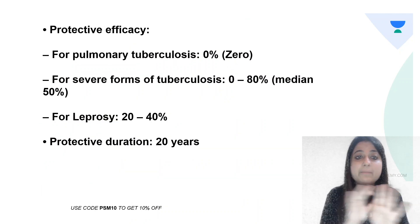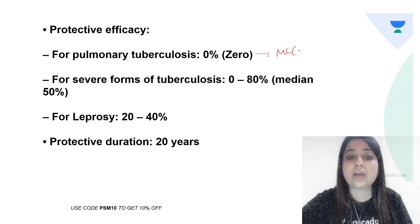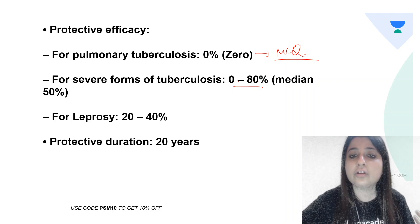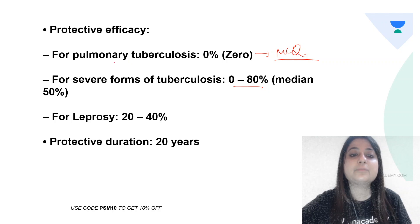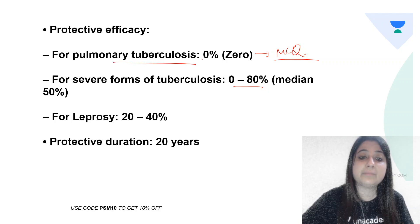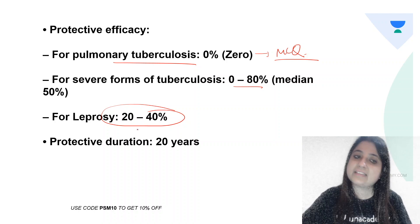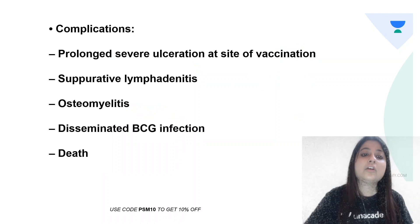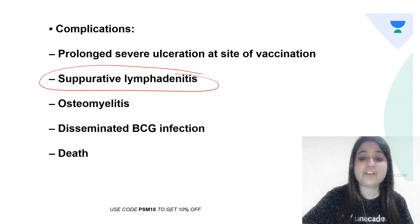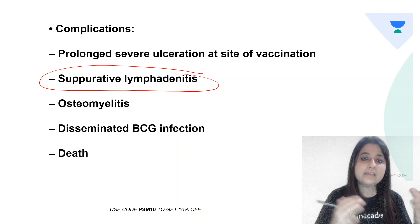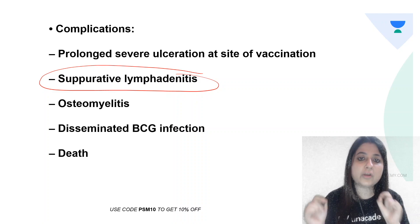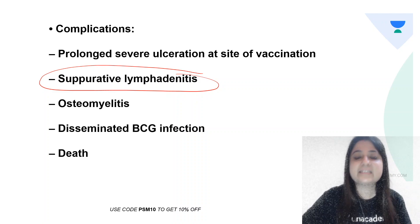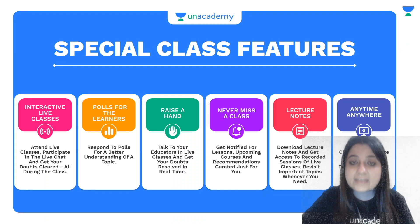Protective efficacy: for pulmonary TB, there is no efficacy from BCG. For severe forms of TB like extra-pulmonary TB and miliary TB, efficacy is 0 to 80%. BCG does not protect us from pulmonary TB. For leprosy, BCG vaccine is used and the efficacy is 20 to 40%. Protective duration is 20 years. Complications include suppurative lymphadenitis, osteomyelitis, disseminated BCG infection, and death.